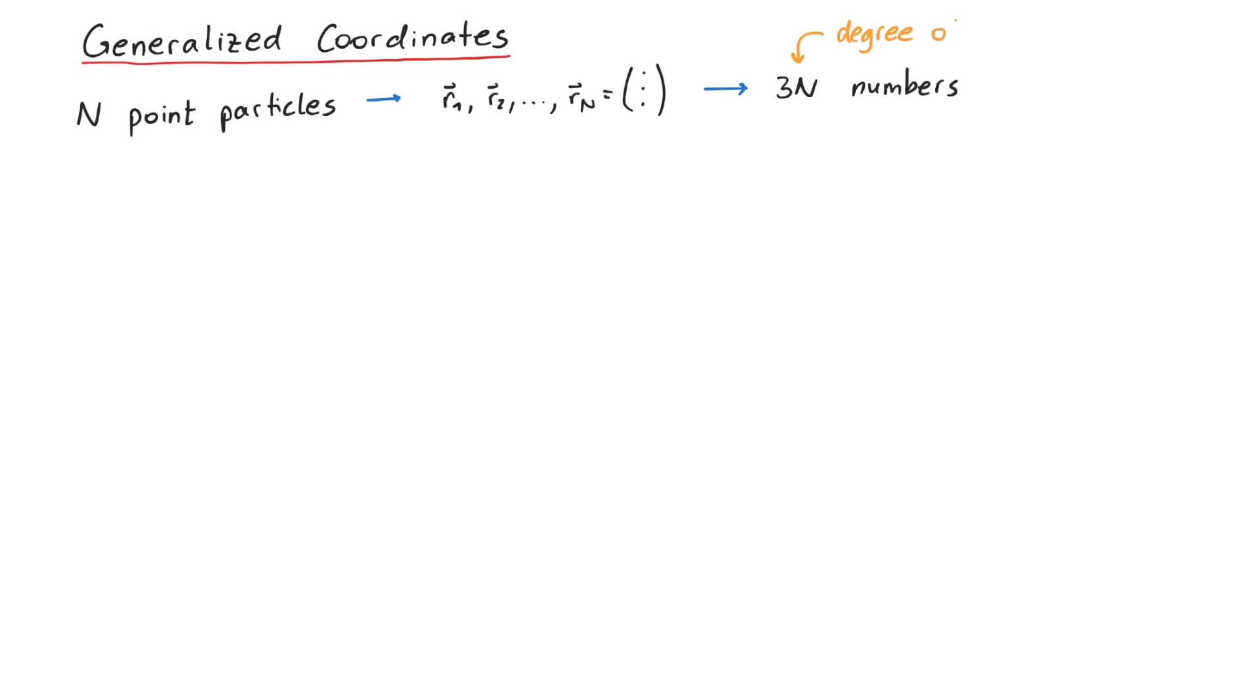This is called the degree of freedom of a system. It's the smallest number of independent quantities to uniquely define the current state of a system.